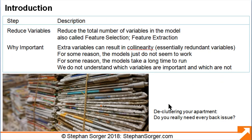Our goal with dimension reduction is to explain the variance in the data using fewer variables. Dimension reduction is sometimes referred to as feature selection or feature extraction. We do this because we can encounter problems if our data contains excessive variables. Extra variables can result in co-linearity, which essentially means redundant variables. With extra variables, the models just don't seem to work — they take a long time to run, and we really don't understand which variables are important and which are not.